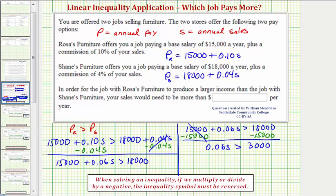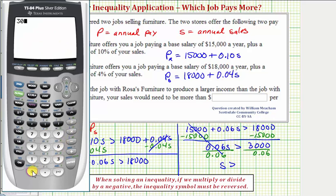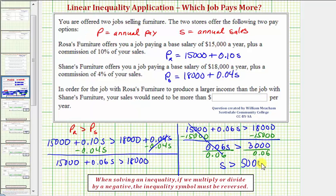The last step is to divide both sides by 0.06. Since we're dividing by a positive number, we do not reverse the inequality. S is greater than 3,000 divided by 0.06, which equals 50,000. This means in order for Rosa's Furniture to produce a larger income than Shane's Furniture, your sales would need to be more than $50,000 per year. So if you can sell more than this amount, you'd make more money working for Rosa's Furniture rather than Shane's. I hope you found this helpful.